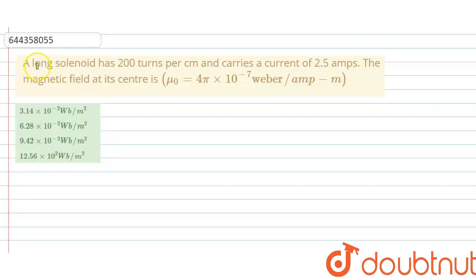Hello everyone, let me explain this question to you. A long solenoid has 200 turns per centimeter, carries a current of 2.5 amperes. The magnetic field at its center is given.